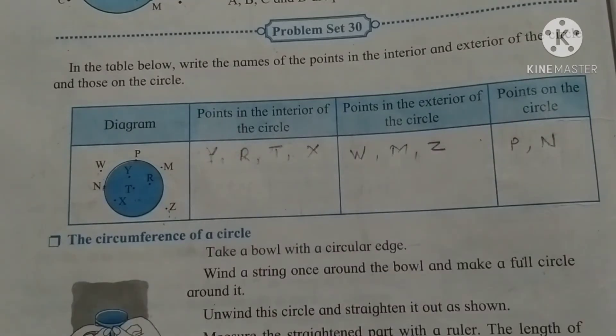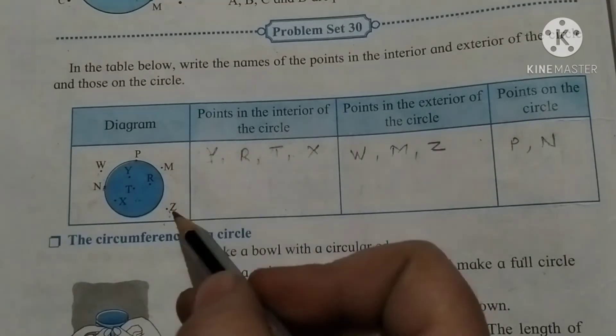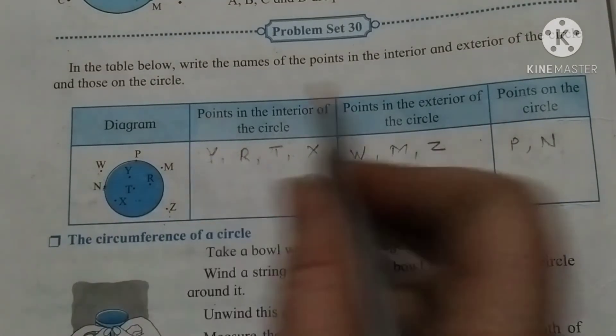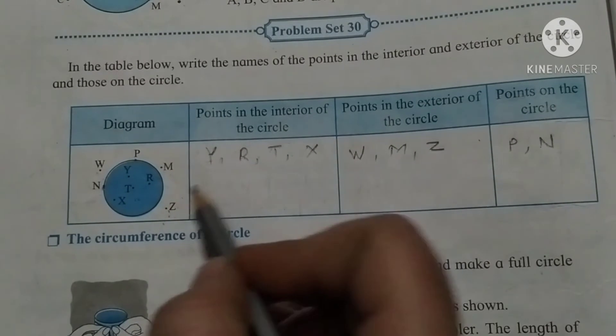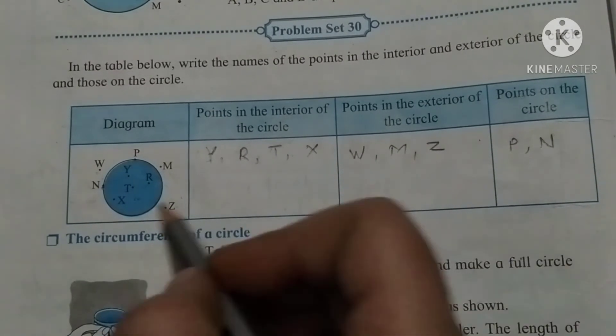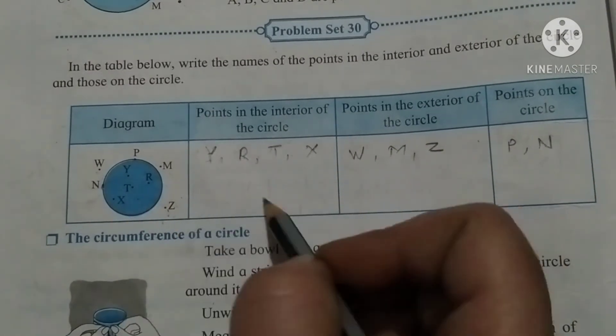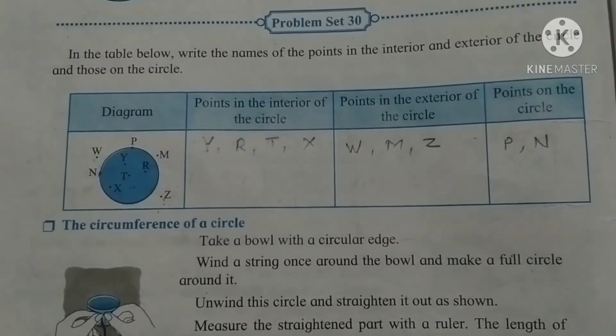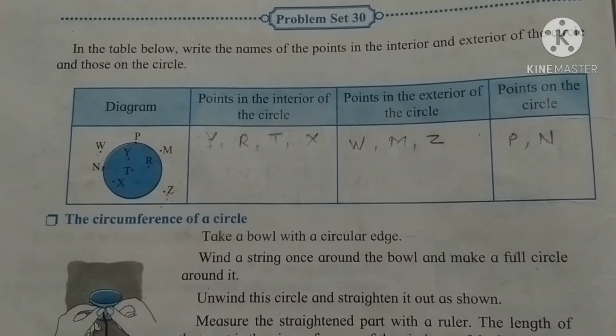So interior means inside the circle: Y, R, T, X. Exterior means outside: W, M, Z. And on the circle: P and N. Everyone write this question in your CW properly, make a table, draw the circle and write the answers.